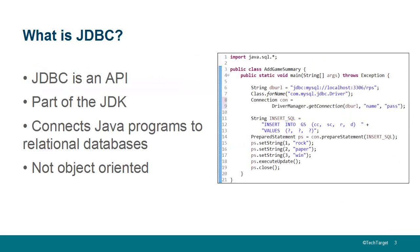So first of all, in order to understand this debate, you need to know what is JDBC. JDBC is a low-level API, it's part of the JDK, and its sole purpose is to connect your Java programs to relational databases like DB2 or MySQL. It's not object-oriented, and so when we develop Java applications, we develop them in an object-oriented way. Databases aren't object-oriented, and so there's something called an impedance mismatch between a relational database and your Java code.